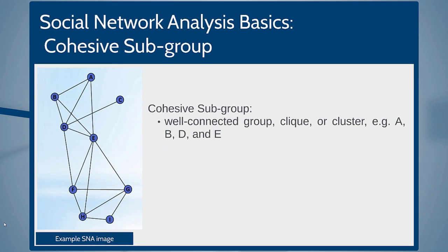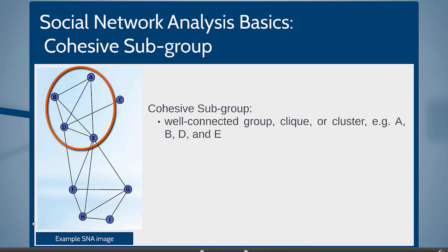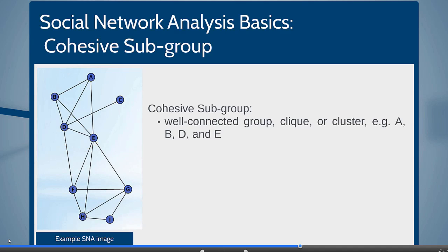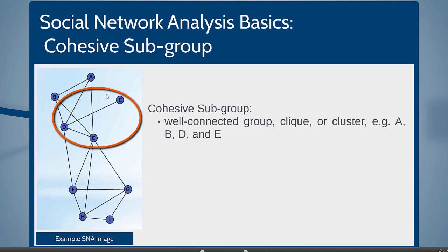We start looking at characteristics of these overall social networks. We look for clusters or subgroups, and these clusters can form around topics or personal characteristics when looking at Twitter. In this case, we've got a cohesive subgroup from A, B, D, and E, where all of these members are highly interconnected and share a strong number of connections, as compared to, say, C, D, and E, which are less highly connected.